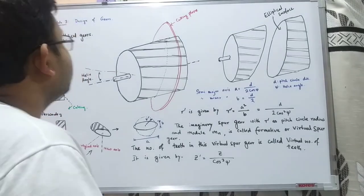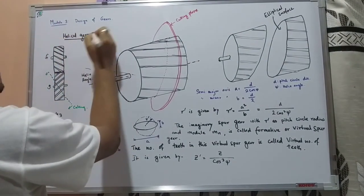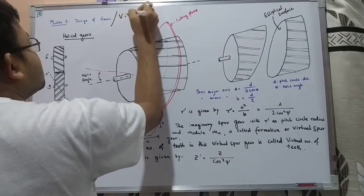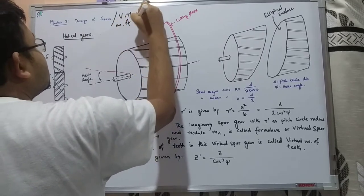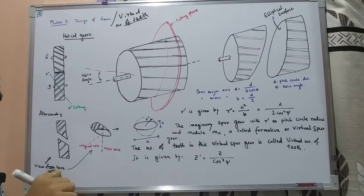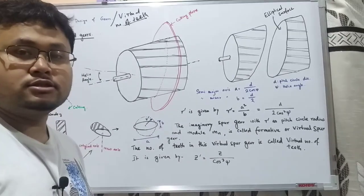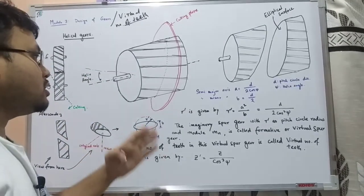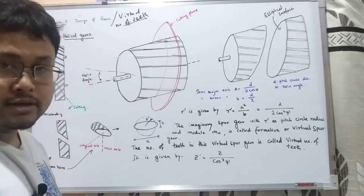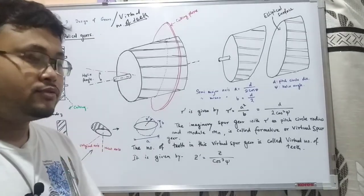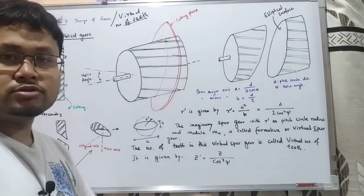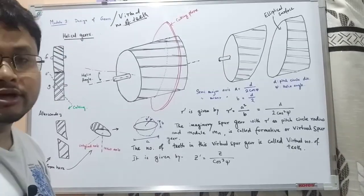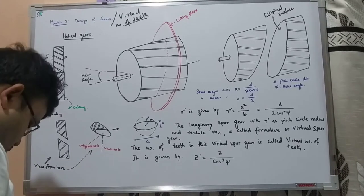In this video we'll be talking about the virtual spur gear and virtual number of teeth in helical gears. This is very important. To design helical gears, we follow the process of spur gear — that means we convert the helical gear to an equivalent spur gear, and we use all the formulas derived before for the design and checking procedure, including bending strength, effective load, everything for spur gear but with modifications.